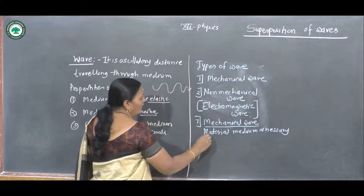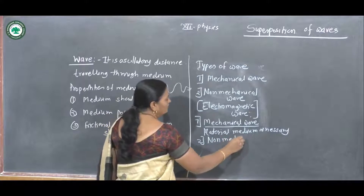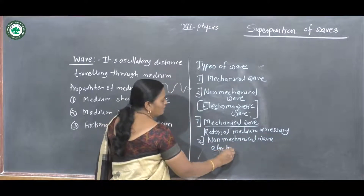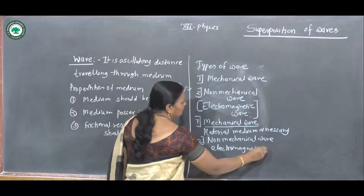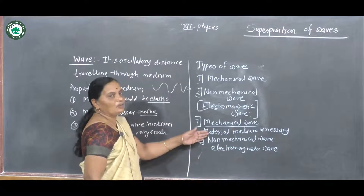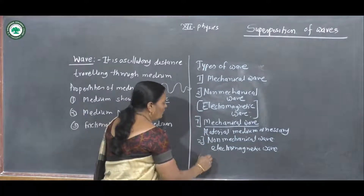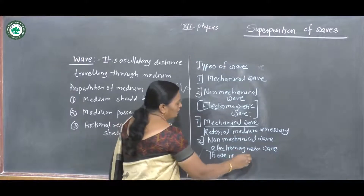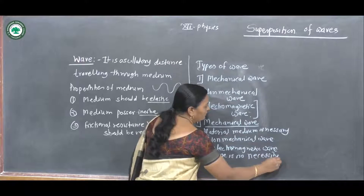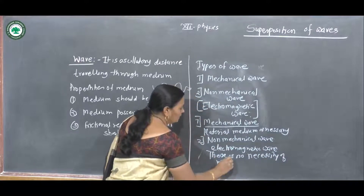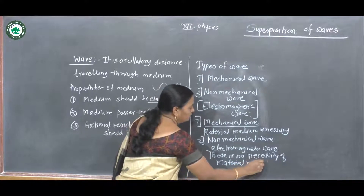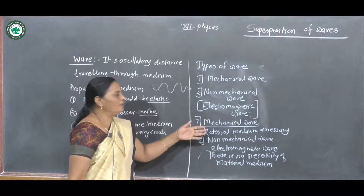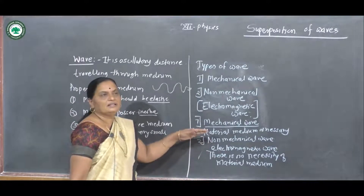In non-mechanical waves, these are the electromagnetic waves. They do not require any type of material medium — there is no necessity of a material medium. For example, mechanical waves are generated on a string, and sound waves are mechanical waves. X-rays are electromagnetic waves.